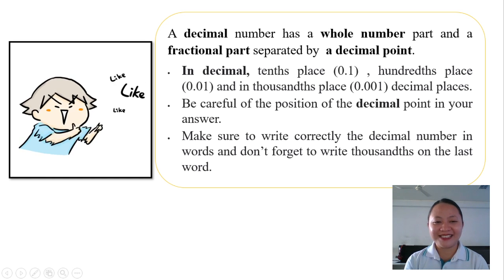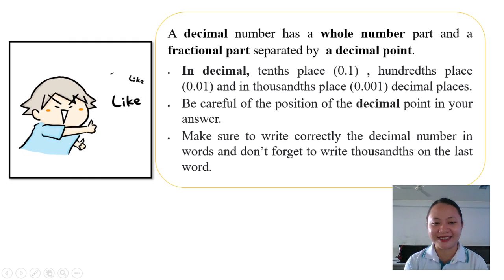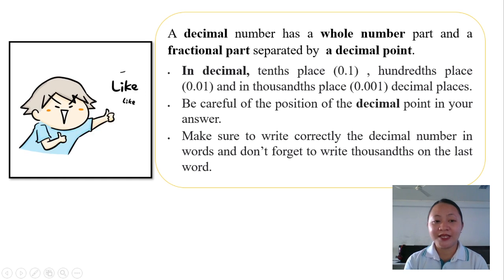Remember, a decimal number has a whole number part and a fractional part separated by a decimal point. In decimal, tenths place has one decimal place, hundredths has two decimal places, and in thousandths, it has three decimal places. Be careful of the position of the decimal point in your answer. Make sure to write correctly the decimal number in words and don't forget to write thousandths on the last word.